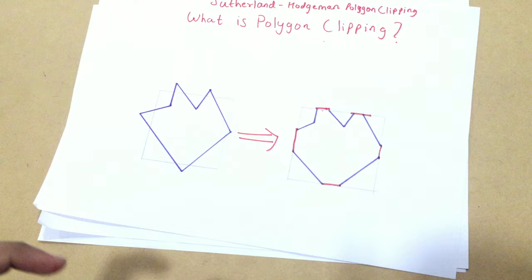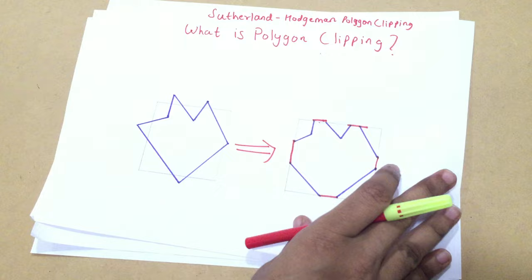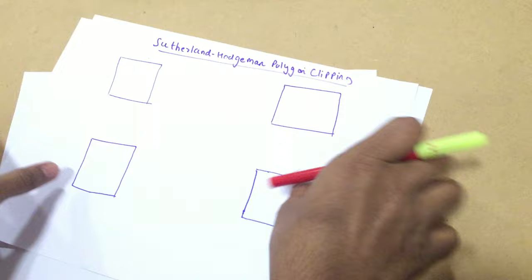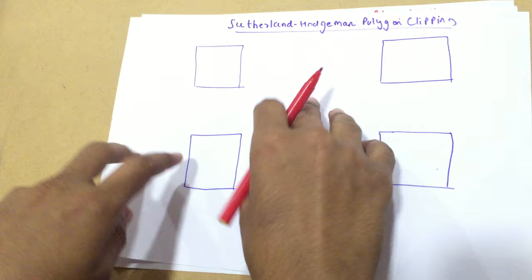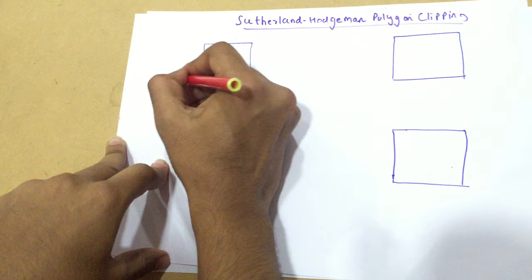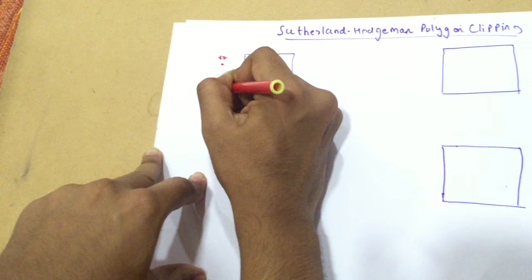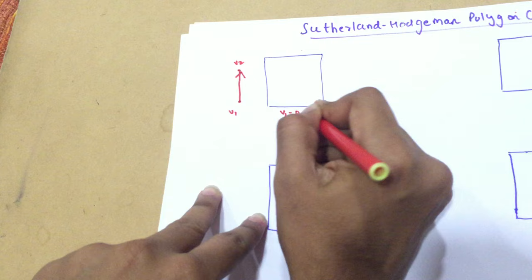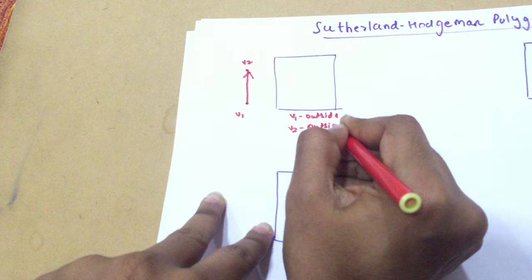So how do you go about it? We have an algorithm put in place by Sutherland and Hodgman, which is called the Sutherland-Hodgman polygon clipping algorithm. There are four rules you should know. Rule number one: if there are two points V1 and V2 which are completely outside, you don't save any points.